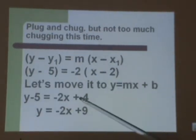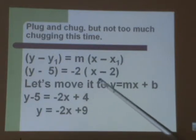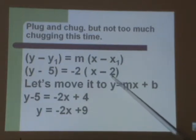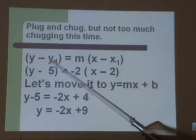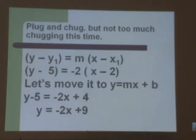So putting in what we have, our point was 2, 5. 2 is in the x location, so 2 goes in where x1 goes. 5 is in the y location, so 5 goes in where y1 goes.